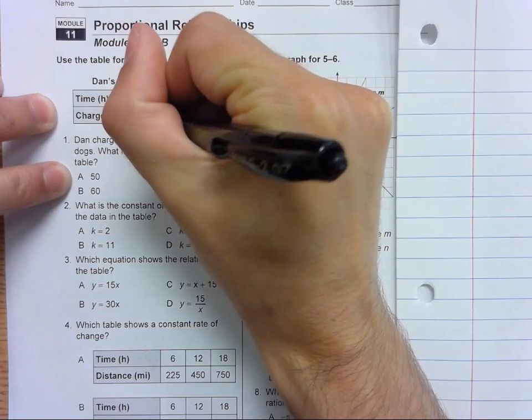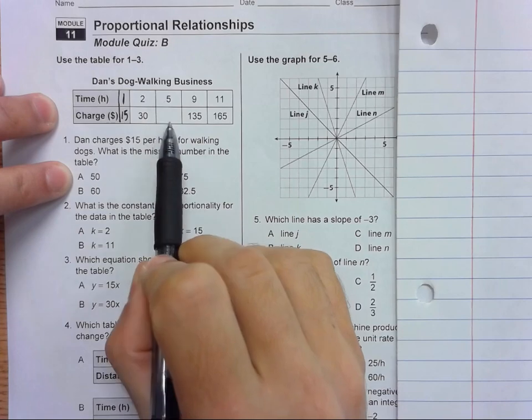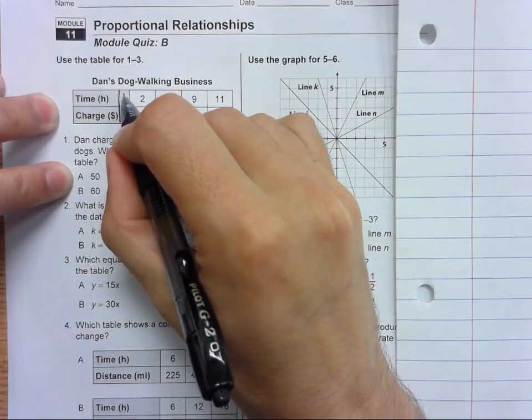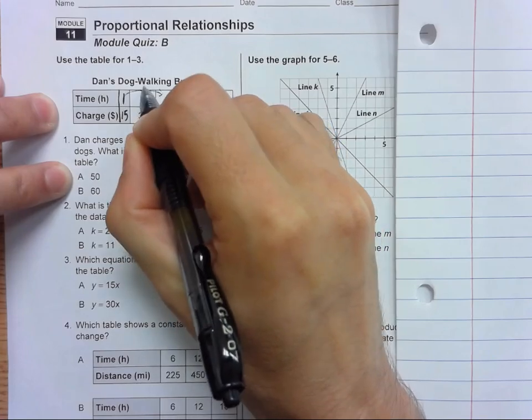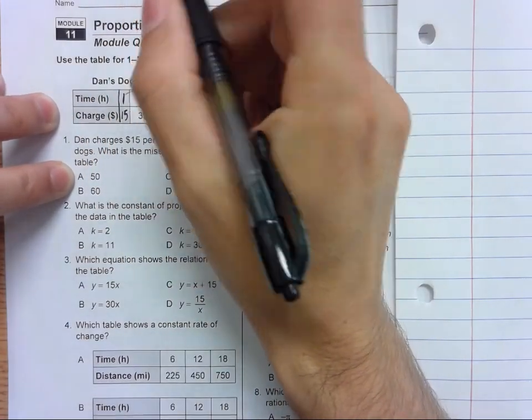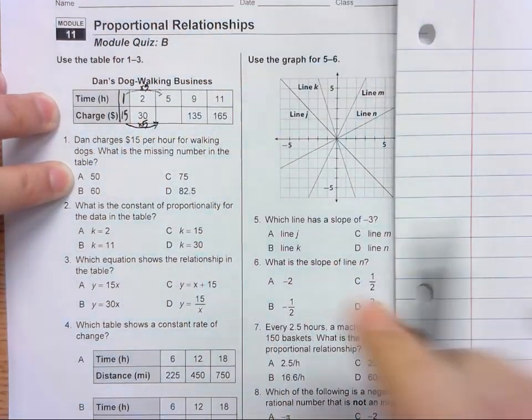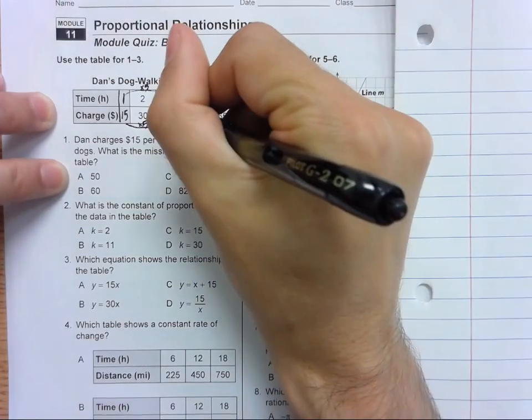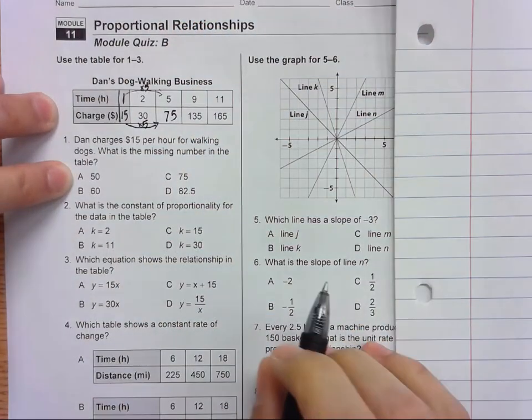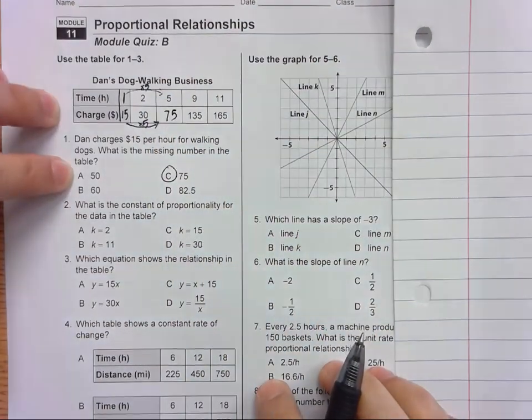We want five hours, so all we'd have to do - well, we could see how do we get from one to five? We would multiply by five, so we would do the same thing here: times five. And 15 times five is 75. So number one is C.